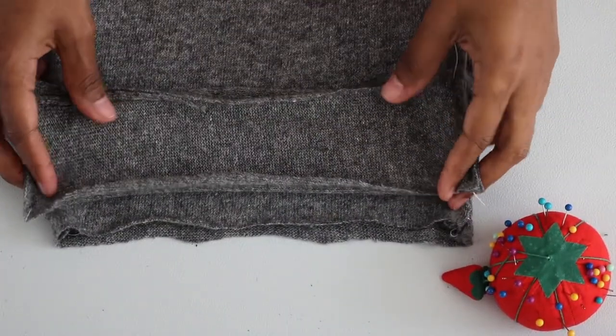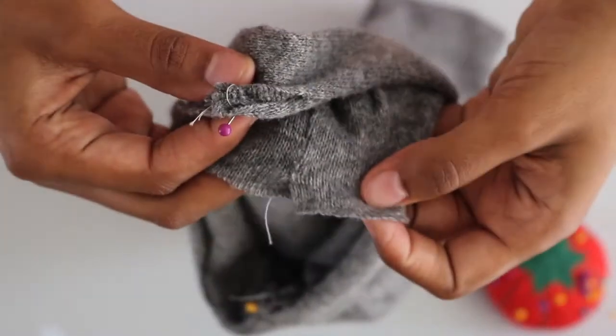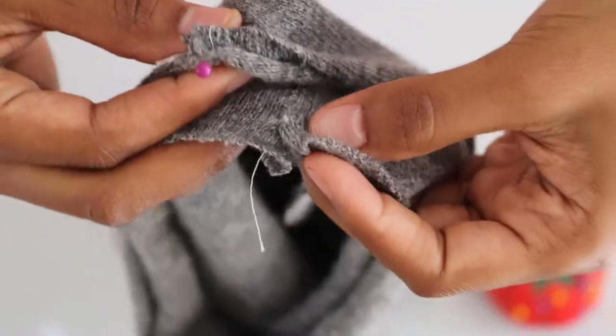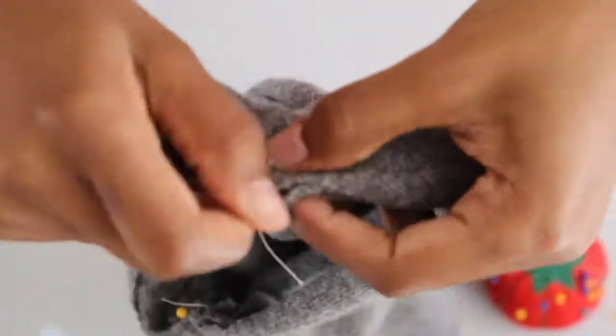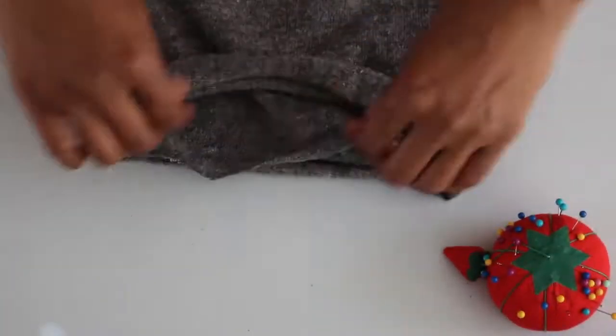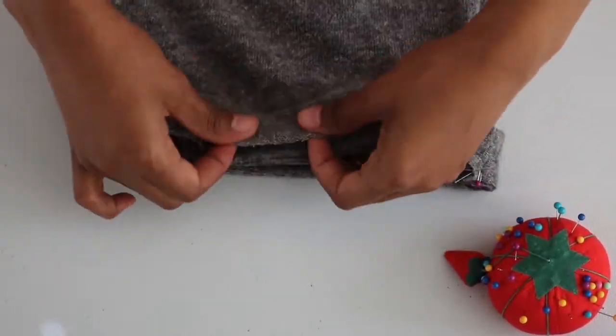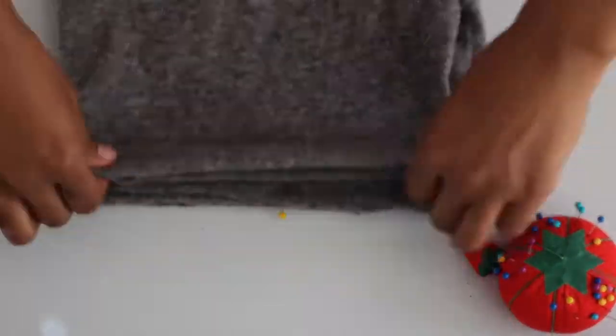So for the waistband, you're going to follow the same exact step as you did for the collar band. Just go ahead and fold that in half and line that seam up with the seam of the pant on the side. And then go ahead and pin around, making sure everything is lined up nice and neat.